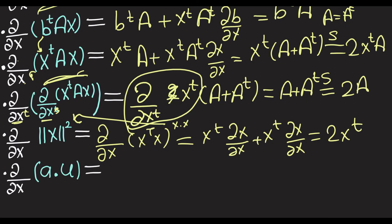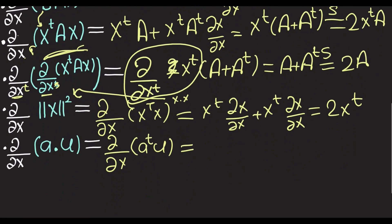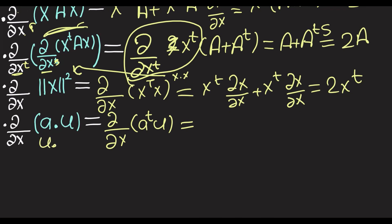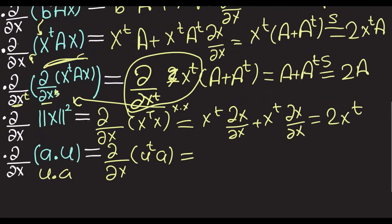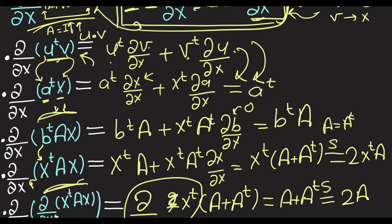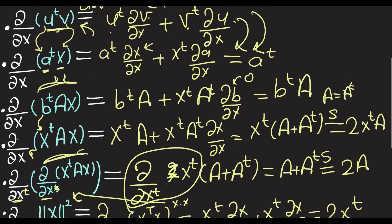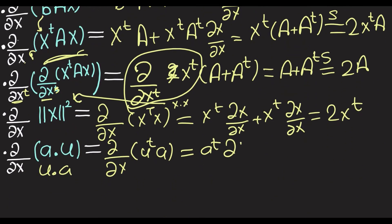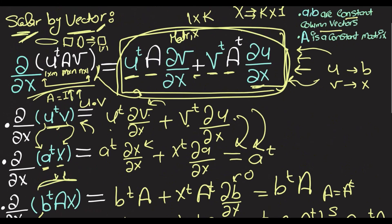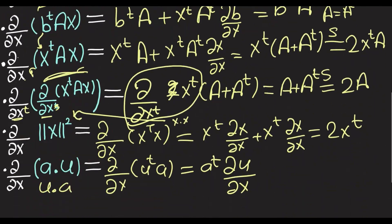How about ∂/∂x of a dot u? This is saying ∂/∂x of a-transpose u. Since a dot u equals u dot a, we can instead write u-transpose a, and replace all v's with a. The term ∂a/∂x is zero, and replacing all v's with a gives a-transpose times ∂u/∂x. That's all I wanted to show you in this video — I hope you liked it, thank you so much.